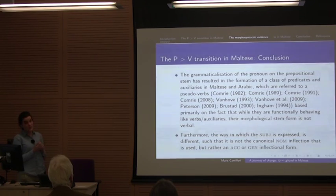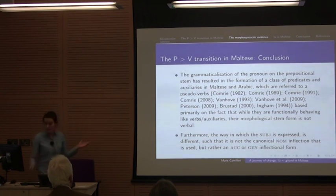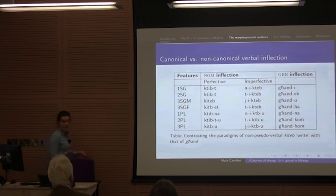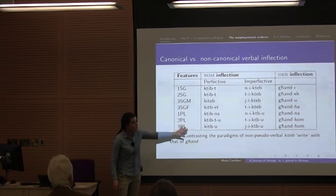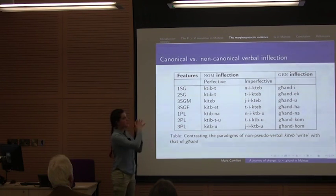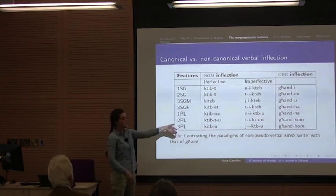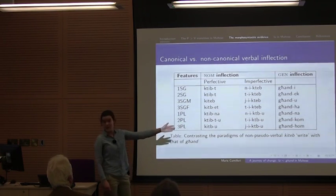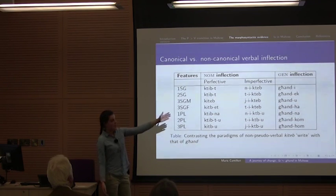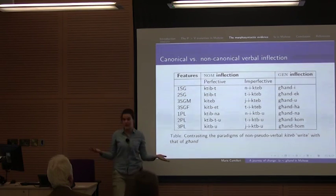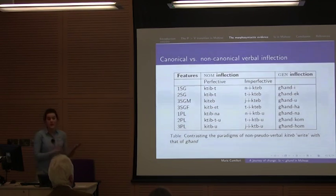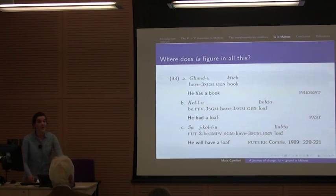All this — the grammaticalization of the pronoun especially — has resulted in the formation of this class of predicates referred to as pseudo-verbs in the literature on Maltese and Arabic. These are referred to as pseudo-verbs because while they take verbal uses and auxiliary interpretations, with features typically associated with auxiliaries or verbs, nonetheless the stem form is not really verbal — just as 'and' came out of a preposition. Additionally, the subject ends up being expressed non-canonically: instead of the usual nominative inflection, you end up with genitive or accusative inflectional form. So this would be a completely different paradigm from canonical Maltese verb forms.